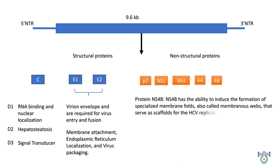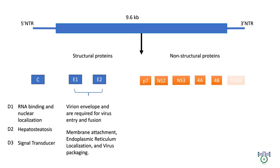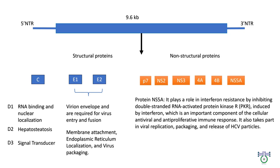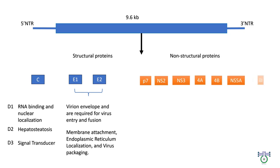Protein NS5A plays a major role in interferon resistance by inhibiting double-stranded RNA-activated protein kinase R induced by interferon, which is an important component of the cellular antiviral and anti-proliferative immune system. It also takes part in viral replication, packaging, and release of HCV particles. Protein NS5B possesses RNA-dependent RNA polymerase activity and plays an essential role in viral replication.